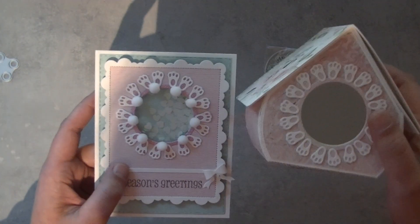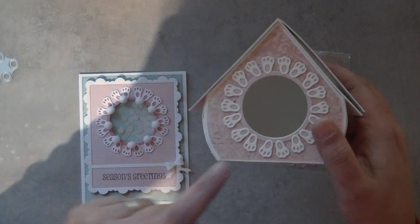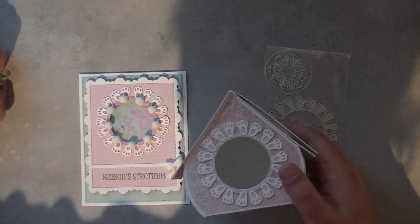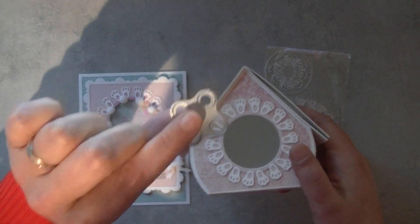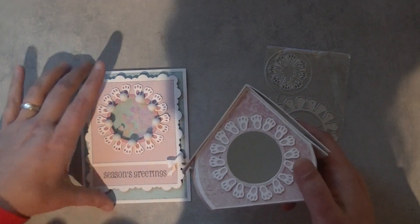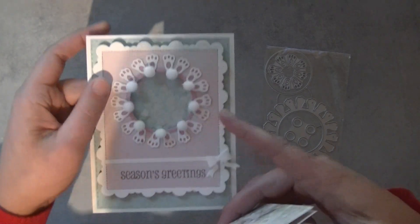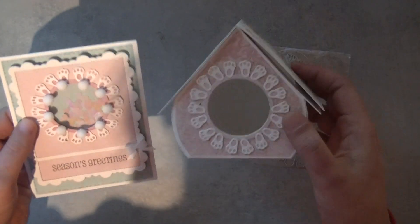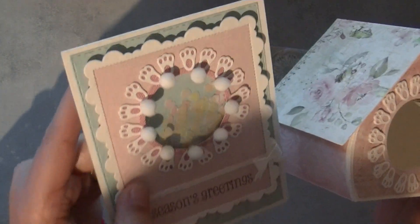The only thing I didn't do is put pom-poms on this one. In the die set you'll find a little die that you can cut them out from paper, but I didn't have those tiny ones anymore so I couldn't put them on the birdhouse box. But you could put tiny little pom-poms on the bunny feet and make it look like a bunny bum.